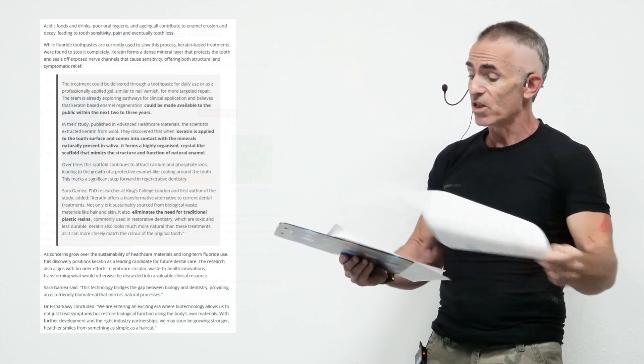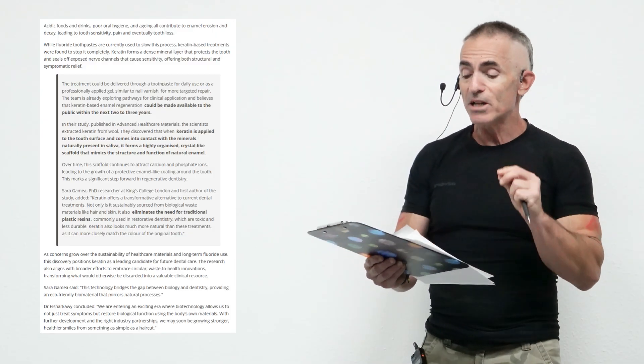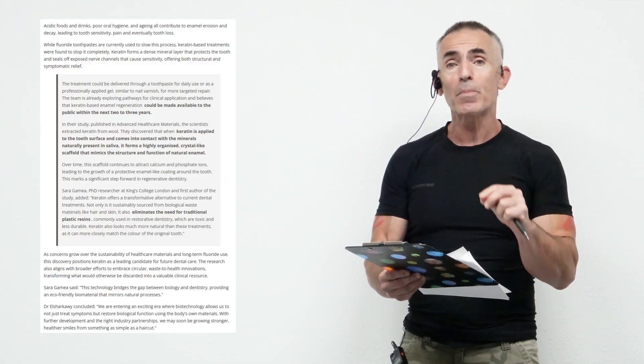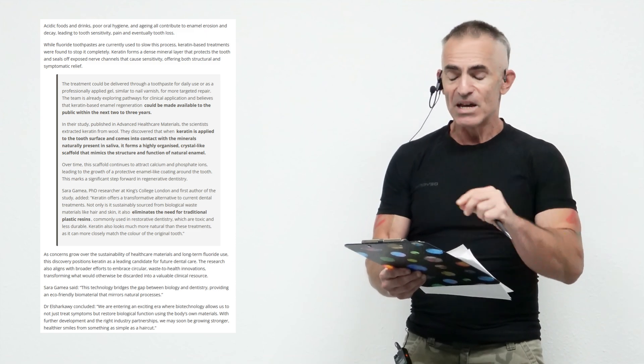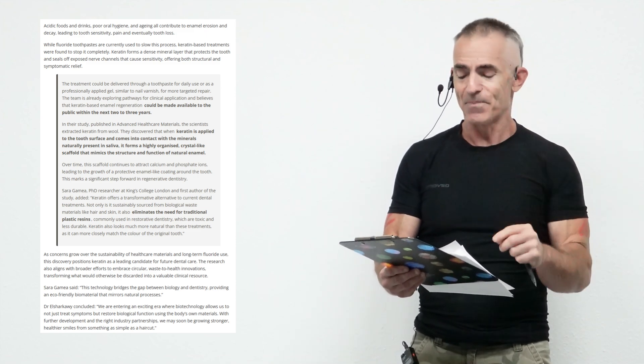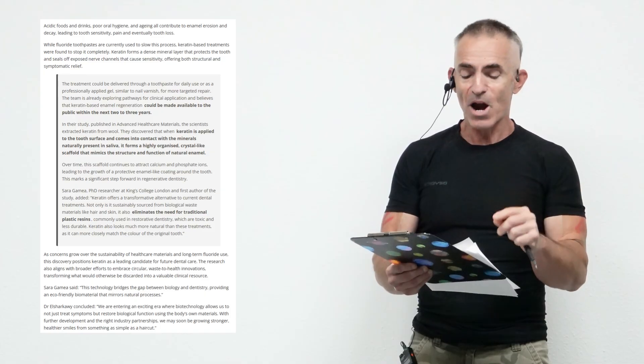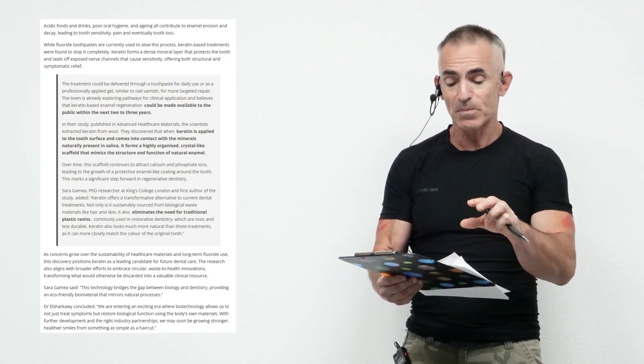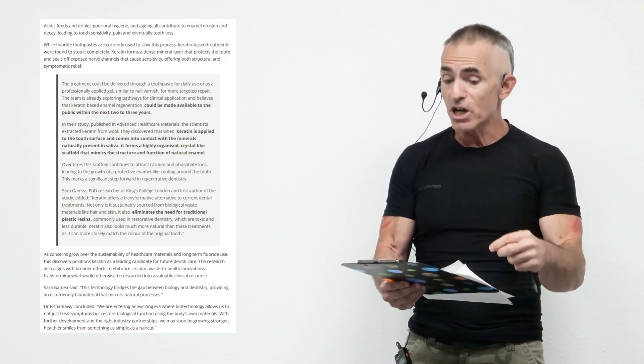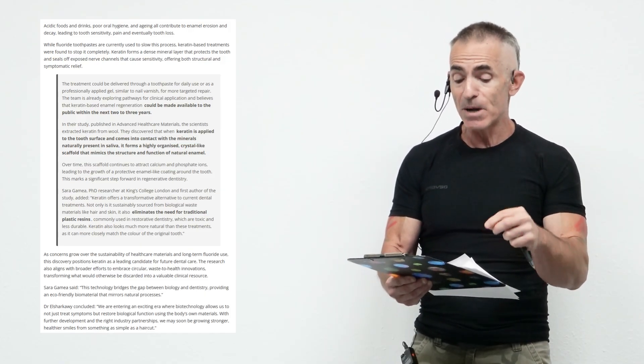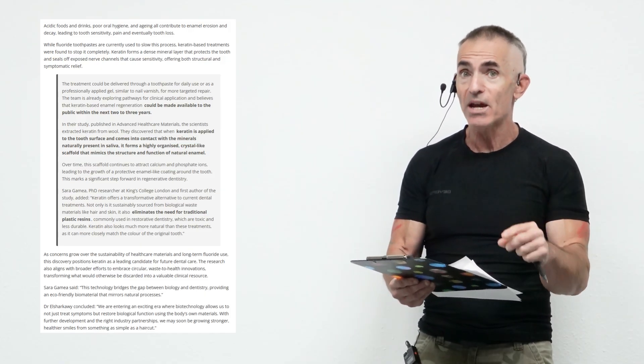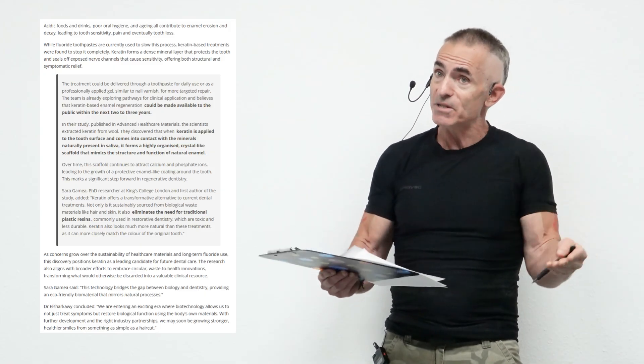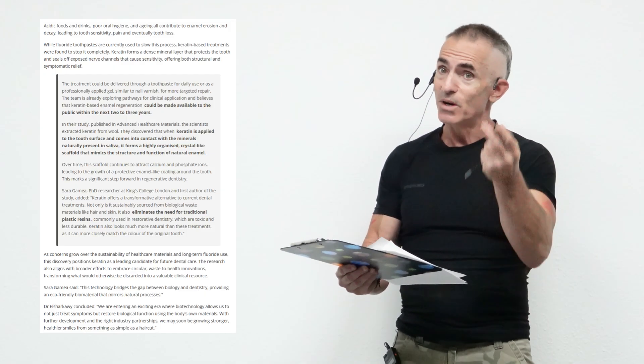Let's get right into the study a little more in detail. The treatment could be delivered through a toothpaste for daily use or as a professionally applied gel, similar to nail varnish for more targeted repair. The team is already exploring pathways for clinical application and believes that keratin-based enamel regeneration could be made available to the public within the next two or three years. What a far takeaway from many years ago when they said once your enamel is damaged, there's not much you can do.